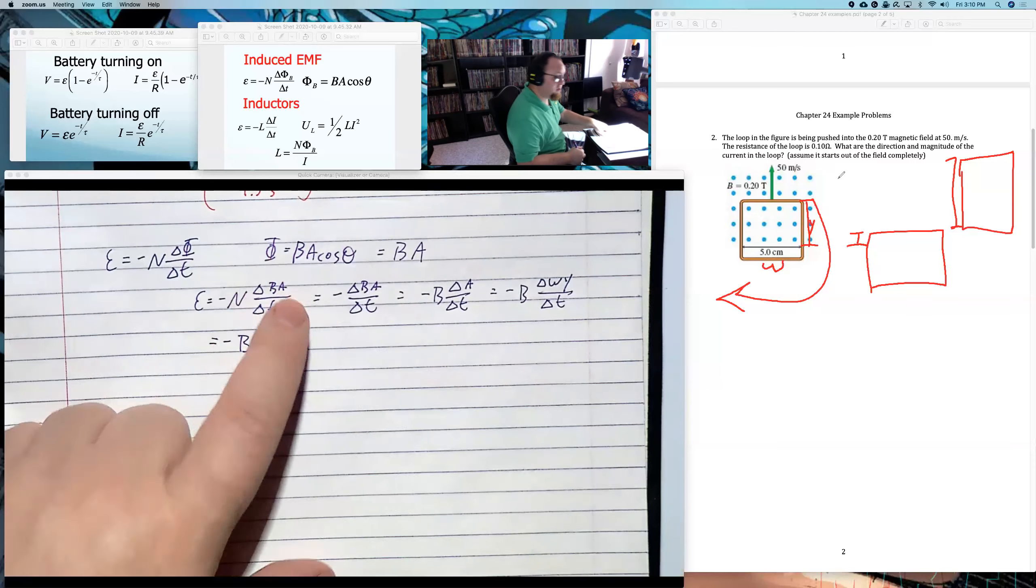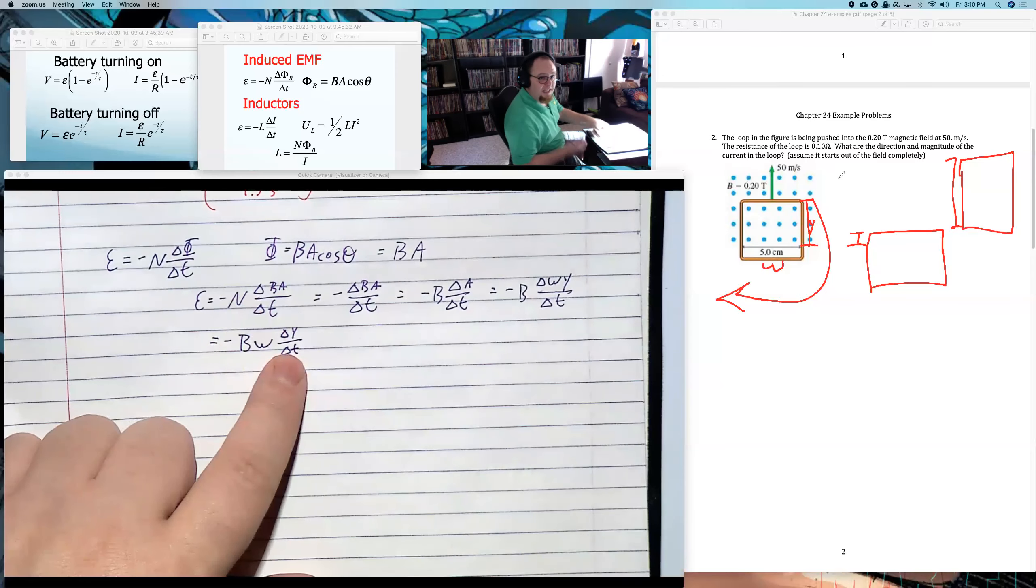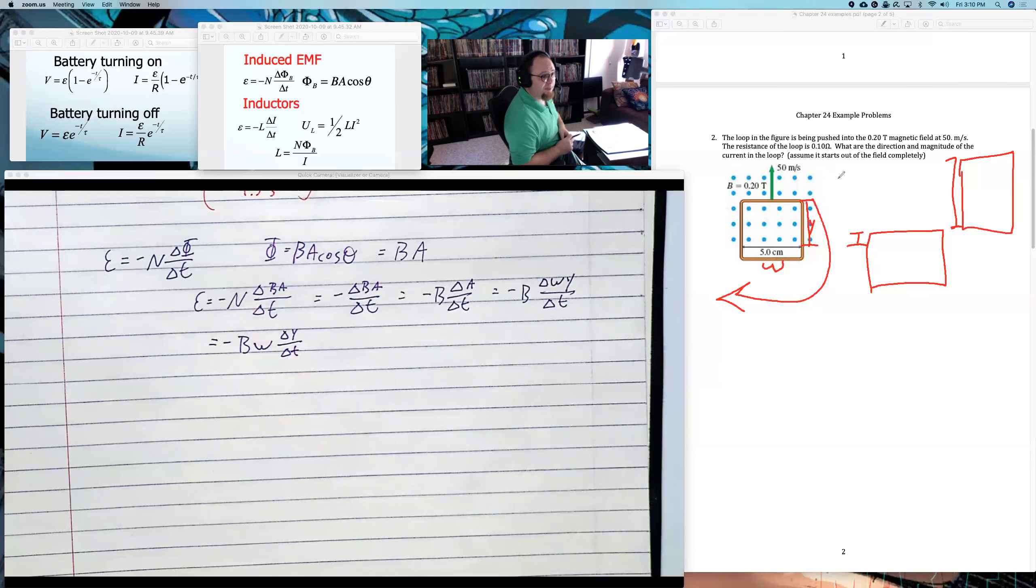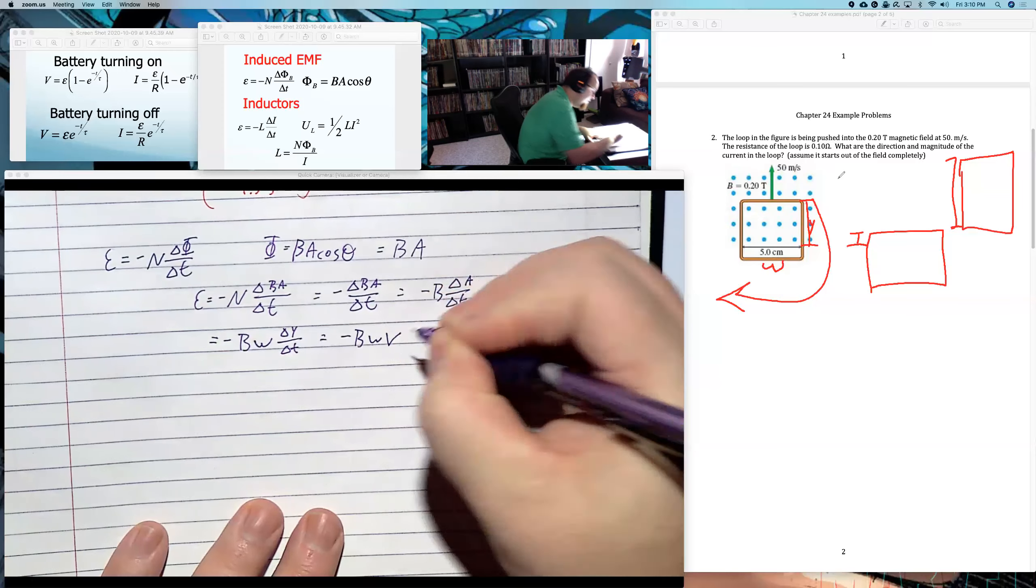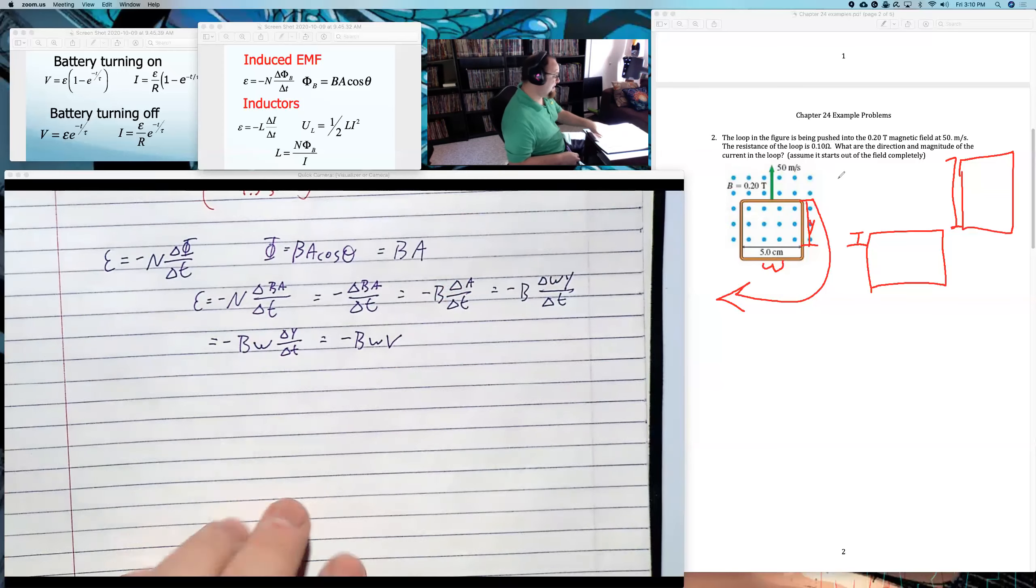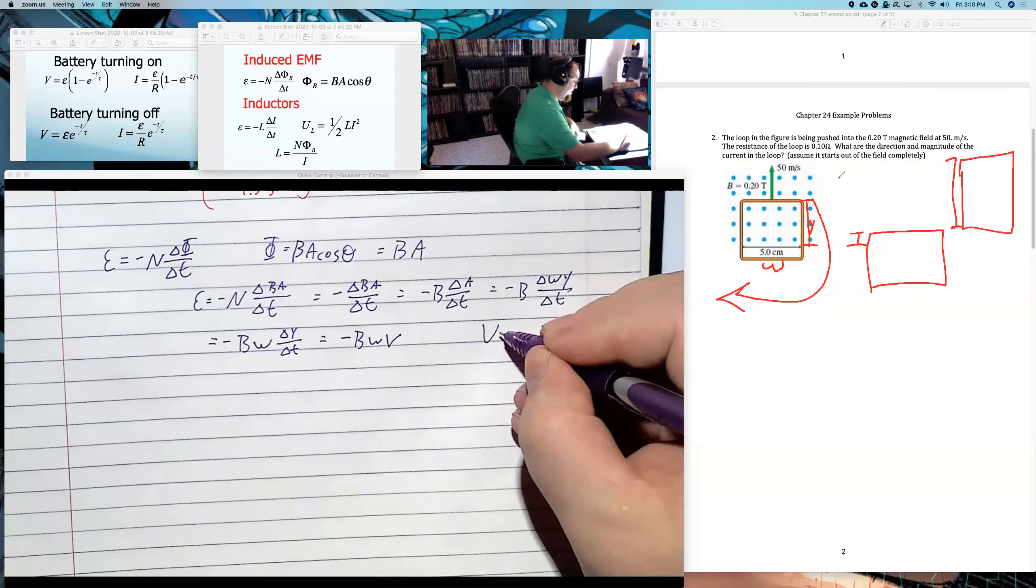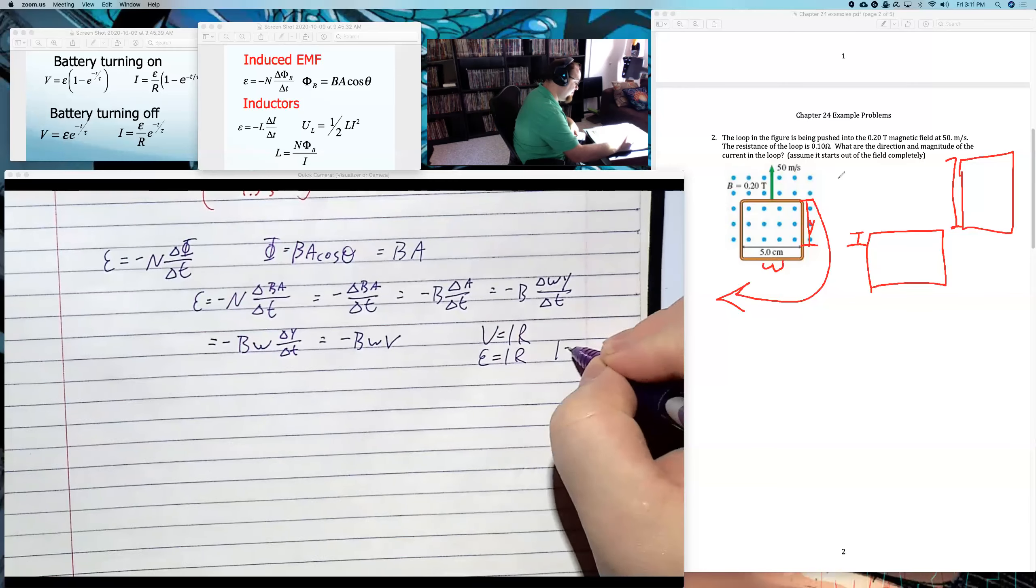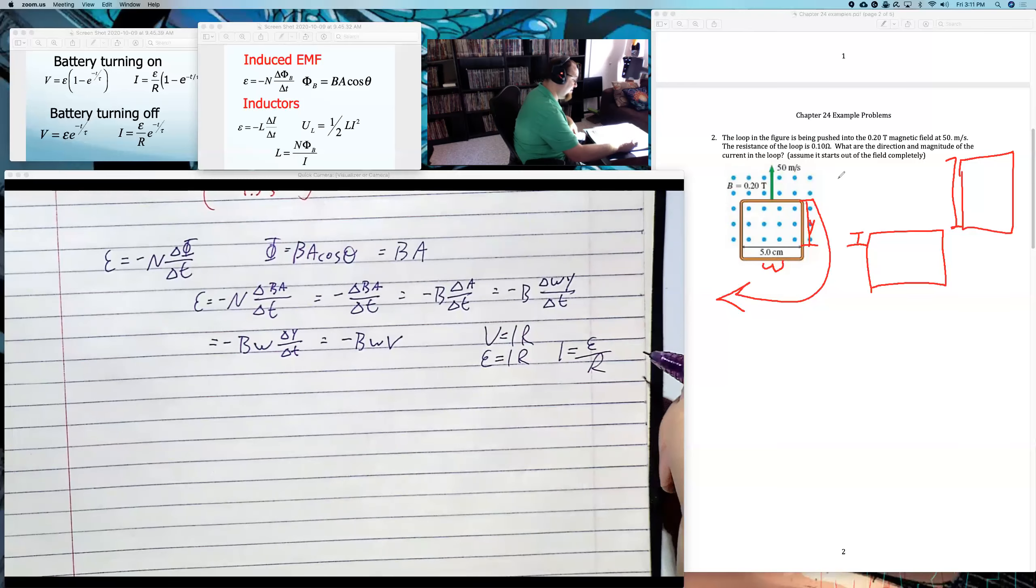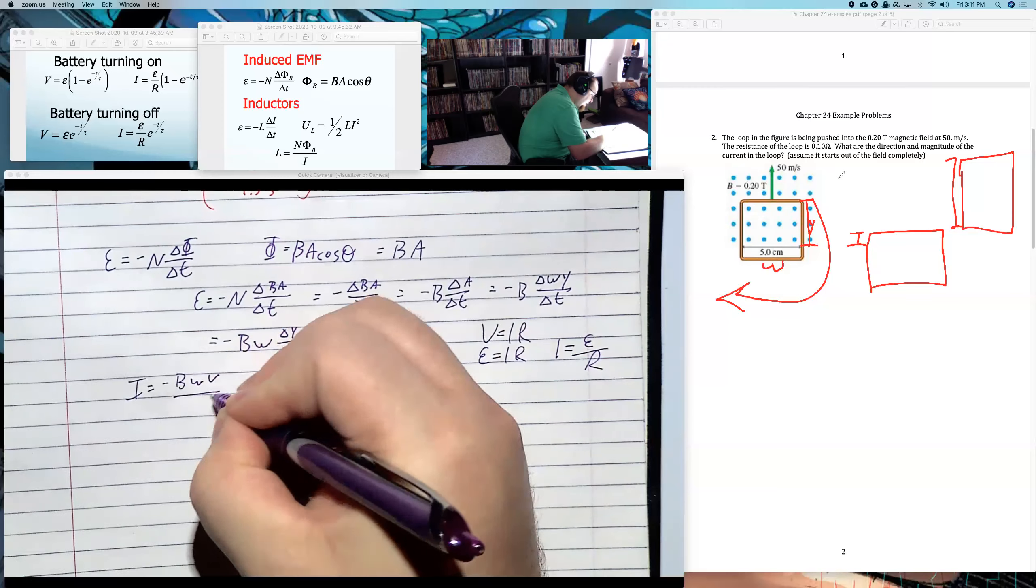I'm left with negative B, W, change in height over change in time. But that, that's the distance over time. And if something's moving at a constant velocity, that's velocity. That's the average velocity equation. Now, if it was changing speeds, I'd have to do some crazy stuff here. But if it's not changing speeds, that's my velocity. So it's negative B, W, V. At least that's the EMF. I didn't ask for EMF. I asked for current. But V equals IR means also EMF equals IR. So current is EMF over resistance.